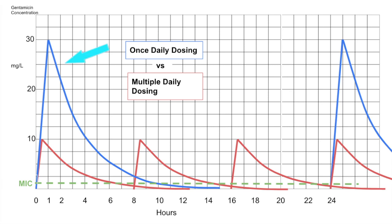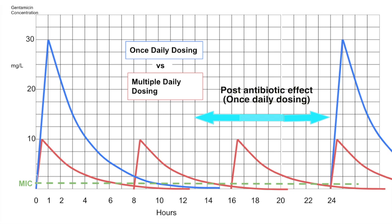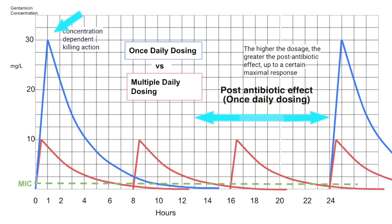With once daily dosing, shown as the blue peak, notice there is a large drug-free interval between when the first dose is cleared and when the next dose is given. During this interval the post-antibiotic effect takes over — the killing effect is still occurring without any drug in the body. You do have to dose quite high initially in order to have that enhanced and prolonged antibiotic effect lasting over the drug-free interval. The killing effect of gentamicin is also concentration-dependent, meaning the bigger the dose, the more effective it becomes at killing bacteria.